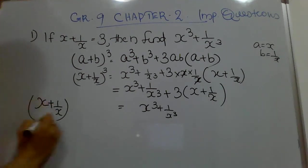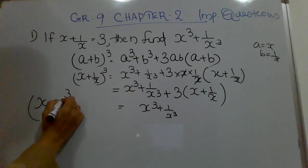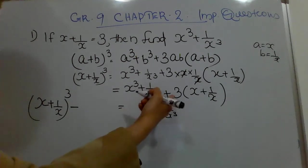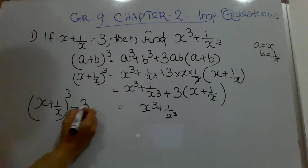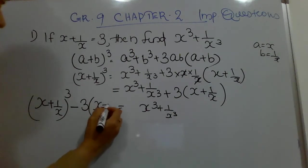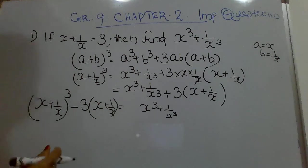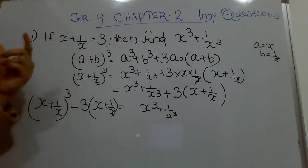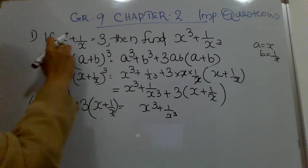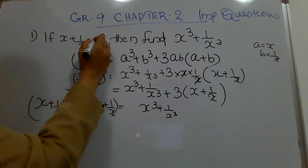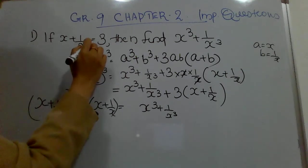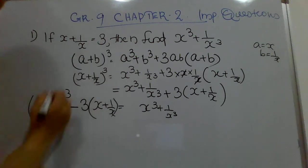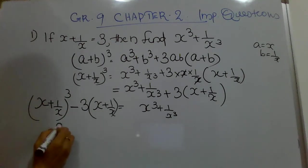Rearranging, x³ + 1/x³ equals (x + 1/x)³ minus 3(x + 1/x). We know the value of x + 1/x = 3, so substitute that value in.